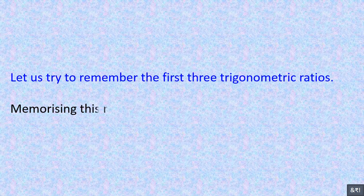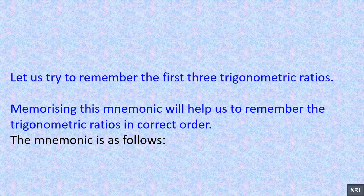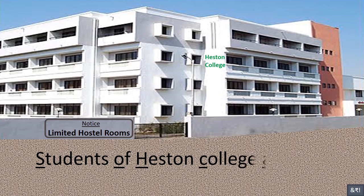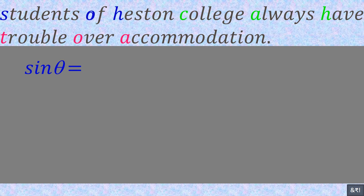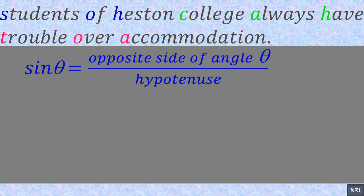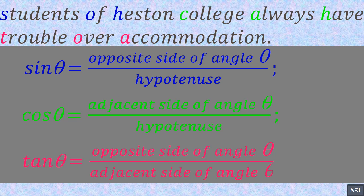Let us try to remember the first three trigonometric ratios. Memorizing this mnemonic will help us remember them in the correct order. The mnemonic is: 'Students of Heston College always have trouble over accommodation.' Sin θ = opposite / hypotenuse, cos θ = adjacent / hypotenuse, tan θ = opposite / adjacent.